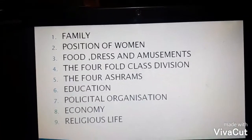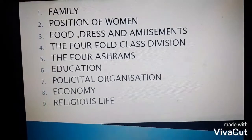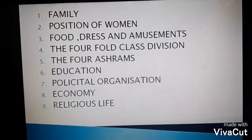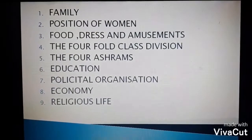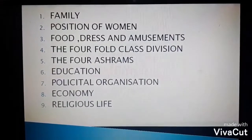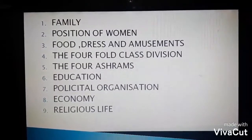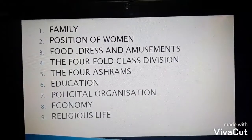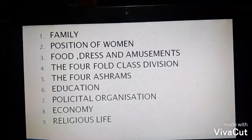In the later Vedic period, the Vidata completely disappeared. The Sabha and Samiti continued but their character changed. The king became more powerful and performed a number of rituals and sacrifices to consolidate his hold over the throne. Rajasuri sacrifices were supposed to confer supreme power to the king. The king also performed the Ashwamedha ritual — a horse was set free and whoever caught it challenged the supremacy and authority of the king. He also performed the Vajapeya, or chariot race, in which the royal chariot was made to win against his king's men. Taxes and tributes were deposited to an officer called Sanghetri.